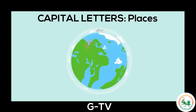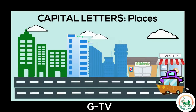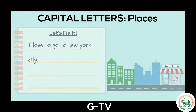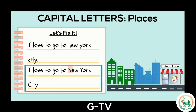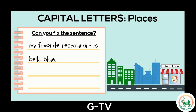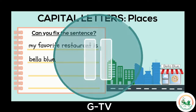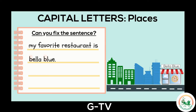Let's go on vacation to New York City! Here is a sentence about the vacation: I love to go to New York City. The words New, York, and City all need a capital letter at the beginning to show that it's a specific place. Can you help fix the next sentence? My favorite restaurant is Bella Blue. Pause the video to practice. Did you make a capital B in the words Bella and Blue? Great job finding the capitals in places!